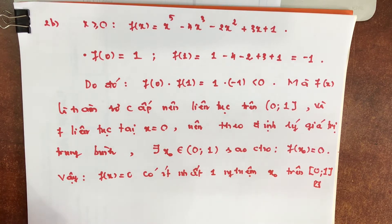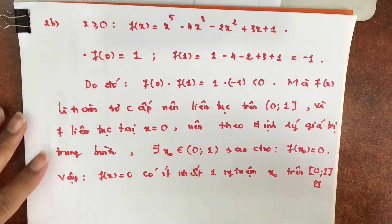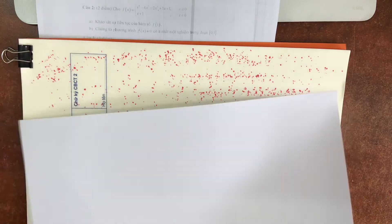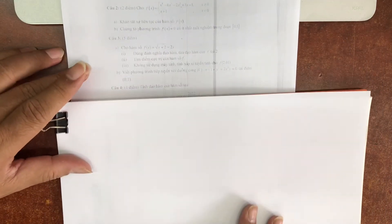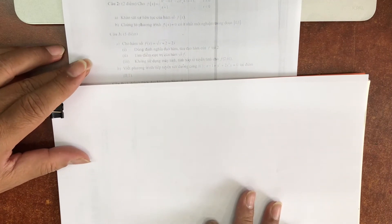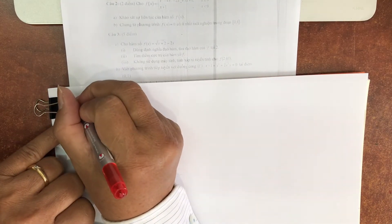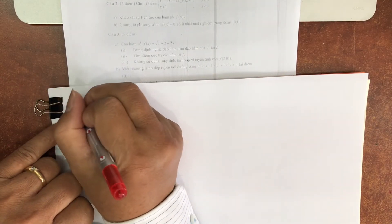Câu 2B dùng định lý giá trị trung bình và mức độ là nhàn nhàng. Từ số 3, số 3 đến 5 điểm.